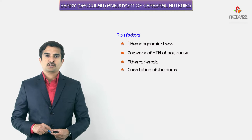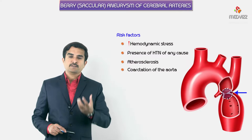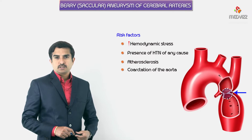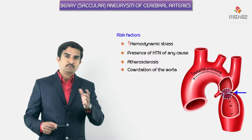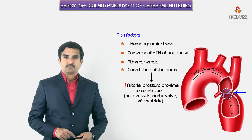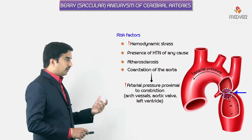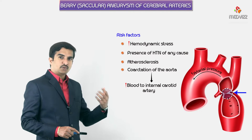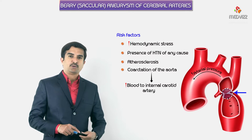Coarctation of the aorta is the constriction of the aorta, usually located below the arch vessels. This increases arterial pressure proximal to the constriction, including in the arch vessels, the aortic valve, and the left ventricle.